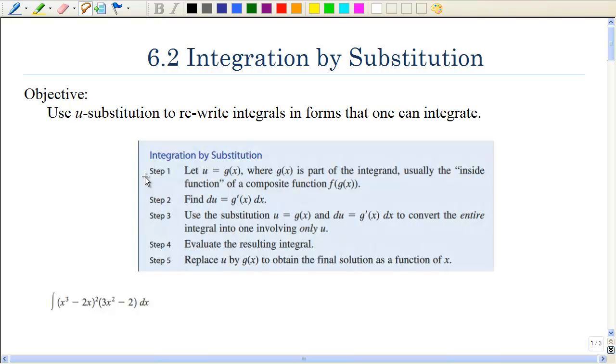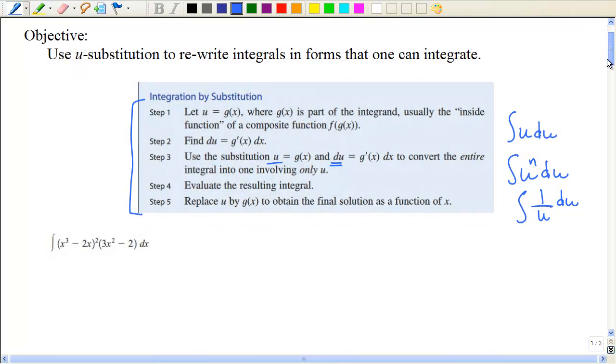We're going to use what's called u-substitution. Basically, what we're going to be doing is we're going to take mainly the most complicated part of the function and make that u, and then we've got to find that du. So our goal is to make it into the form of u du, maybe u to some power so we can use the power rule, 1 over u du, so we could use the natural log rule, etc. So let's just kind of dive in and see how we do that.